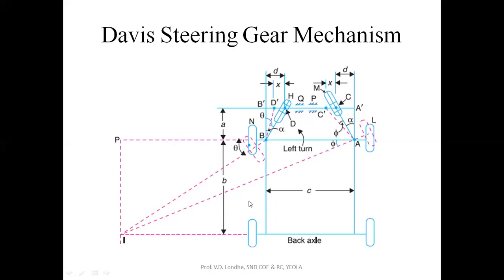For proper turning motion — so that there is no skidding — the condition is that both the center lines of the front and rear axle should meet at one common point. This point is the instantaneous center point.